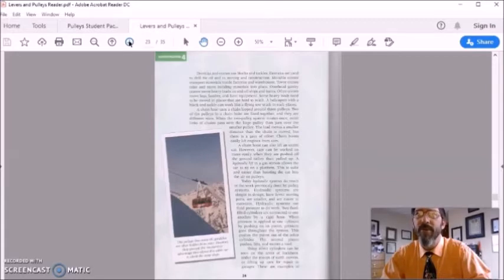Hydraulic systems use fluid pressure to do work. Two fluid-filled cylinders are connected to one another by a rigid hose. When pressure is applied to one cylinder by pushing on its piston, pressure goes throughout the system. This pushes the piston out of the other cylinder. The second piston pushes and lifts and moves a load.